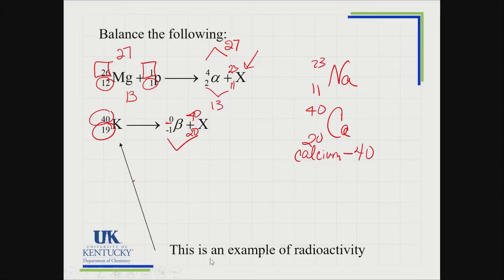This second reaction is an example of radioactivity because we're starting with a single nucleus that is spontaneously breaking apart and changing. The first example is not radioactivity — it requires supplying a proton that gets bombarded into the magnesium at high speed, converting it to something else. That is actually called a transmutation.